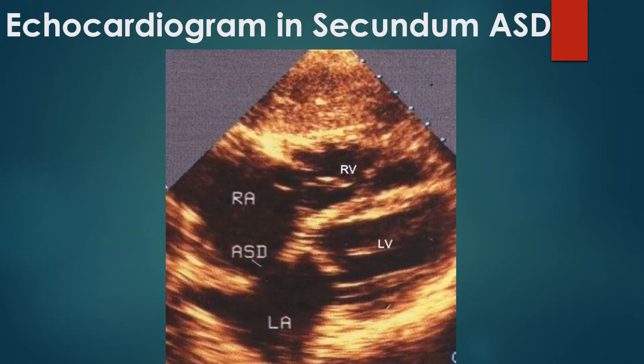Echocardiographic image from subcostal 4-chamber view showing an ostium secundum atrial septal defect. Subcostal view is the ideal view for imaging ASD to exclude false echo dropouts, which may be seen in apical 4-chamber view. This is because the imaging ultrasound beam is perpendicular to the septum in subcostal view, while it is parallel to the atrial septum in apical 4-chamber view.